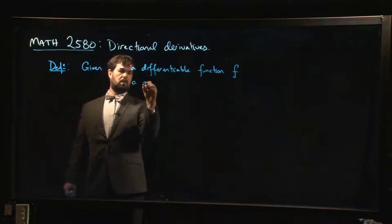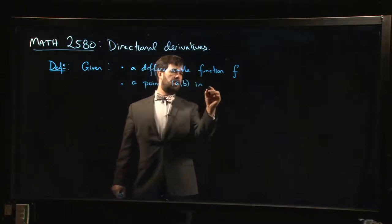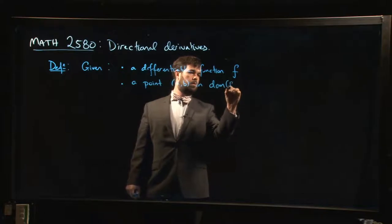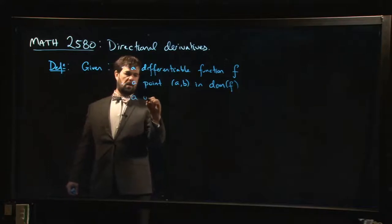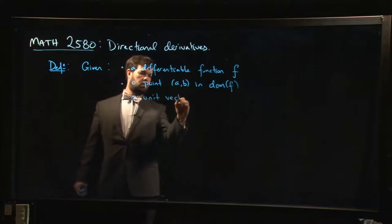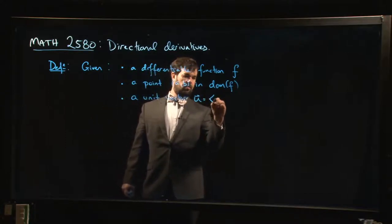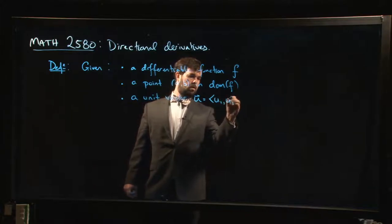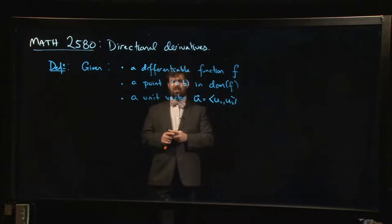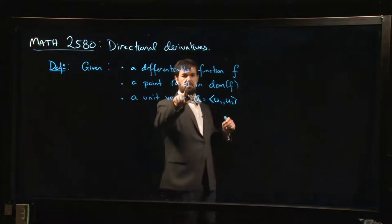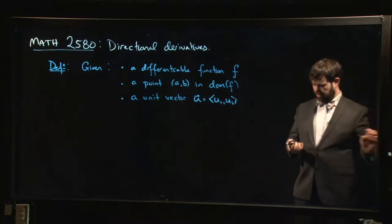A point, let's say (a, b), and that's going to be in the domain of f. And we need a unit vector, so let's call it maybe u = (u1, u2). I'm doing this in two variables, but everything translates exactly as you would expect to three variables. You just add one more coordinate to your point, one more component to your vector, and continue as you would expect.